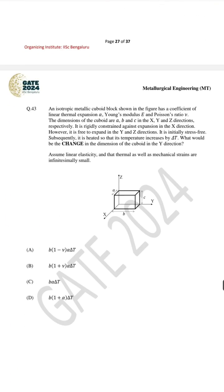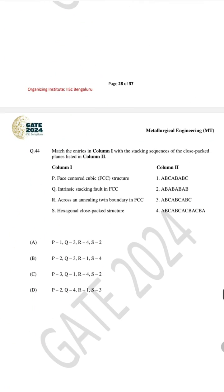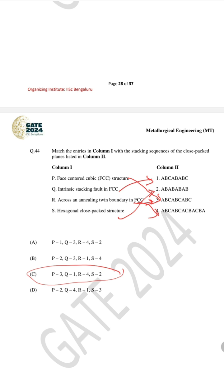For question number 44 the correct answer is C. FCC has ABCABC stacking, hexagonal is ABABAB stacking, intrinsic stacking fault alters this sequence, and for cross-slip the matching is P3, Q1, R4, S2.